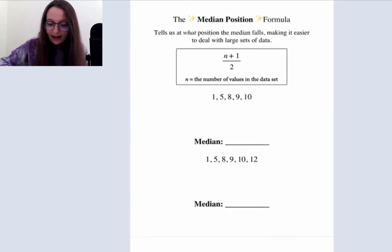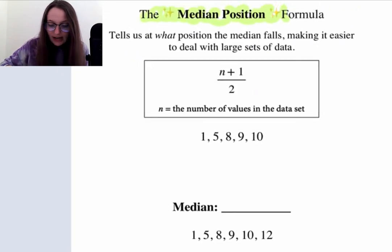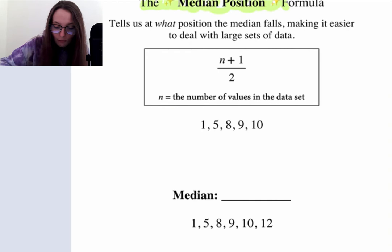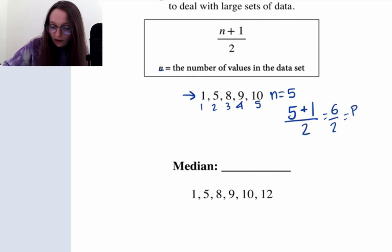So this is where we are going to bring in the median position formula. The median position formula basically tells us at what position the median is going to fall. Let's talk about this first data set right here. n is the number of values in the data set. There are five values in this data set, so n here is going to be equal to five.